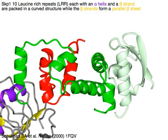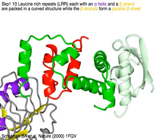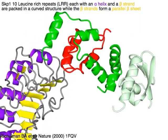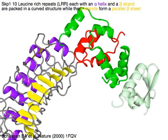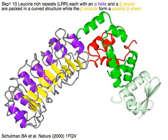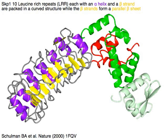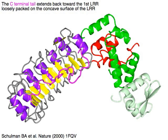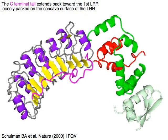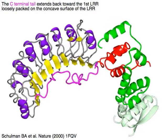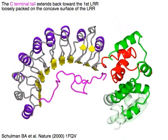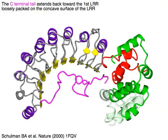SKP2 has ten leucine-rich repeats, or LRR, each with an alpha helix in purple and a beta strand in yellow, packed in a curved structure, while the beta strands form a parallel beta sheet in yellow. The C-terminal tail in magenta extends back toward the first LRR, loosely packed on the concave surface of the LRR yellow beta sheet.